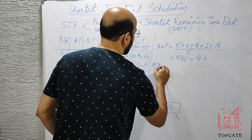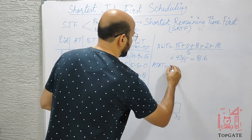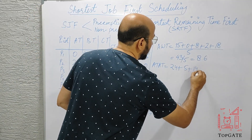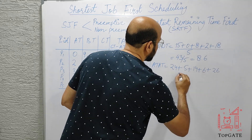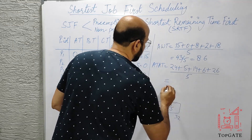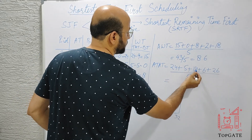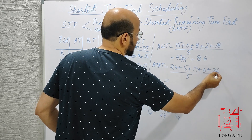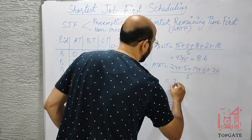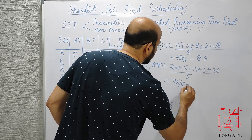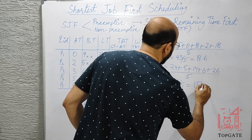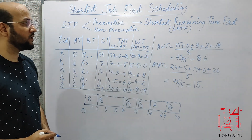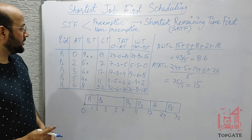Average turnaround time = (24 + 5 + 14 + 6 + 26) / 5 = 75 / 5 = 15. So the average turnaround time is 15 and the average waiting time is 8.6.